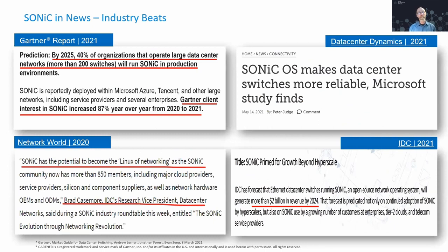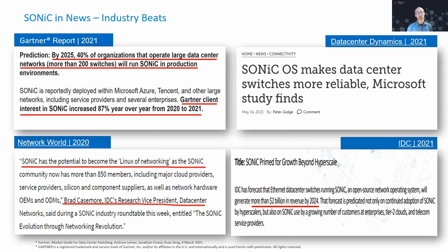SONiC is getting the attention of a large number of people. Gartner predicts that by 2025, 40% of medium and large-size organizations are going to be running SONiC in their production data centers. Interest in SONiC is increasing nearly 100% year over year. Leaders at IDC Research have suggested that SONiC has the potential to become the Linux of network operating systems — and that is our goal. Studies show the SONiC operating system makes data centers more reliable, and the whole ecosystem and market addressed by SONiC appears large and growing rapidly.